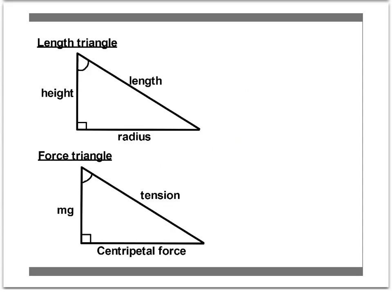You can make two triangles with these sorts of questions. You can make length triangles with height, radius and length, and some angle at the top there, and you can make force triangles with the weight force acting down, the tension force acting up here, the object down the string here, and centripetal force acting towards the centre, centripetal force being the net force in this case, acting towards the centre, the sum of those two forces.